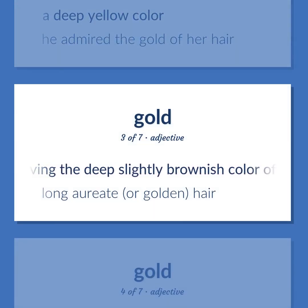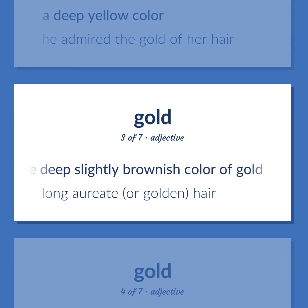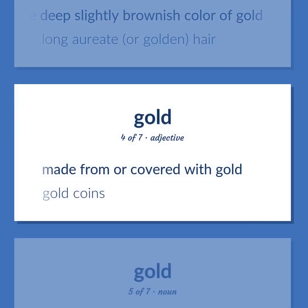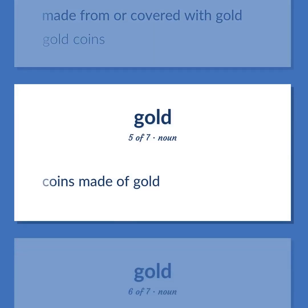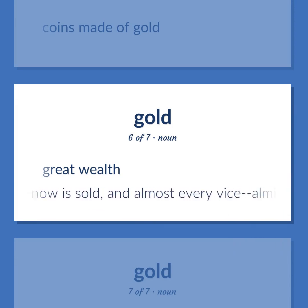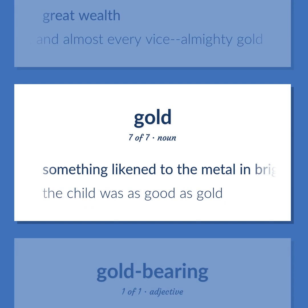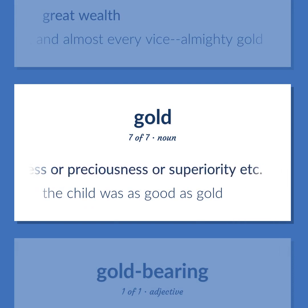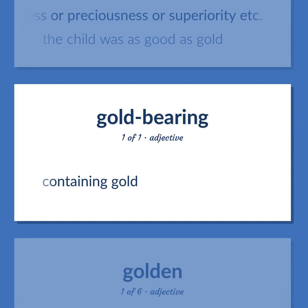Gold (adj, sense 1): having the deep slightly brownish color of gold — long or golden hair. Gold (adj, sense 2): made from or covered with gold — gold coins. Gold coins: coins made of gold. Gold (noun): great wealth — 'whilst that for which all virtue now is sold, and almost every vice, almighty gold.' Gold (figurative): something likened to the metal in brightness, preciousness, or superiority — 'the child was as good as gold.'